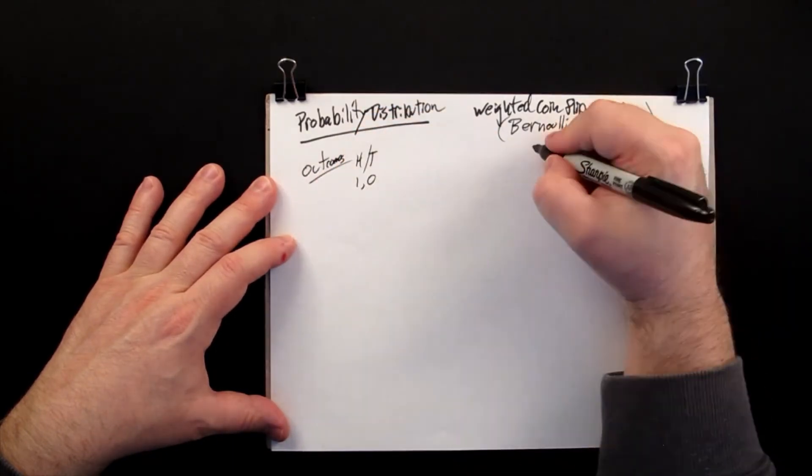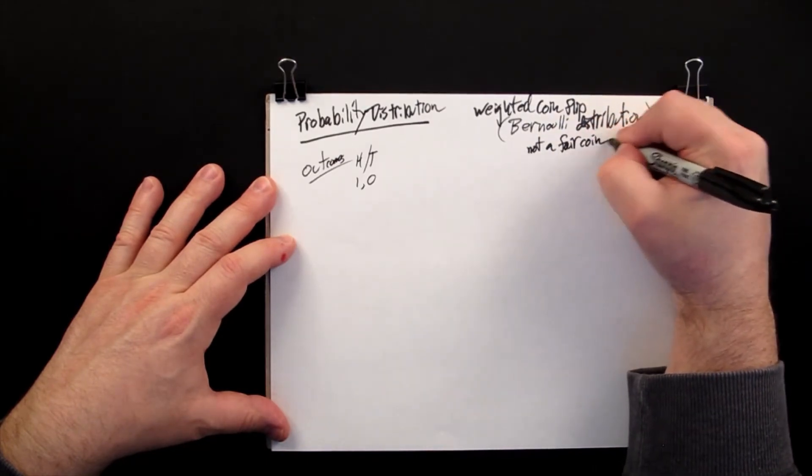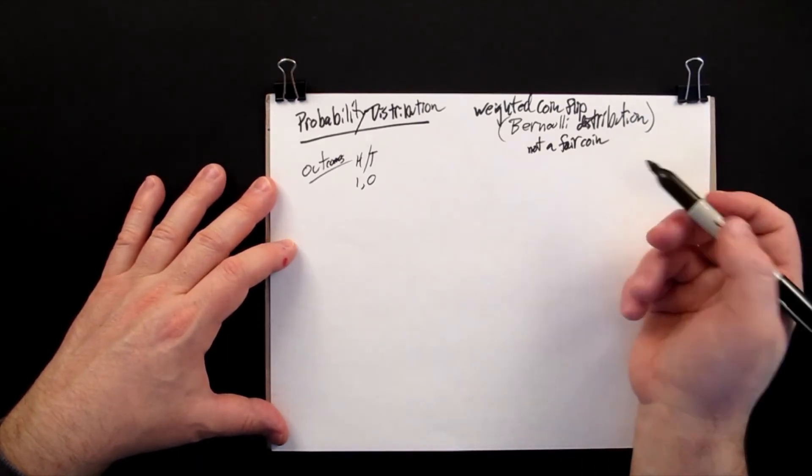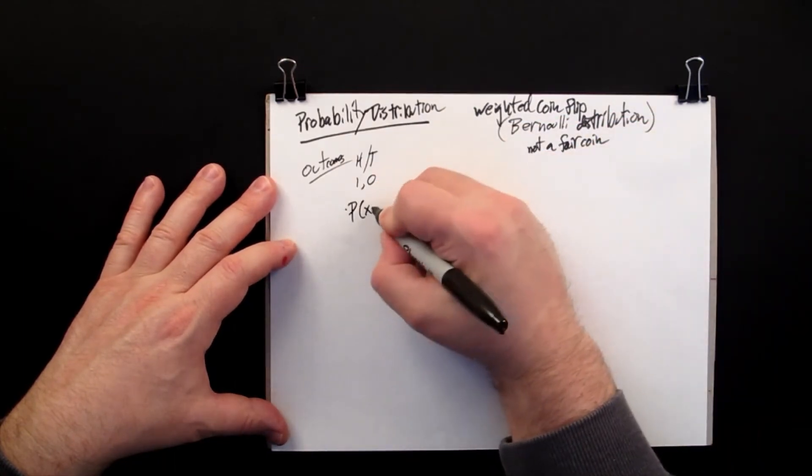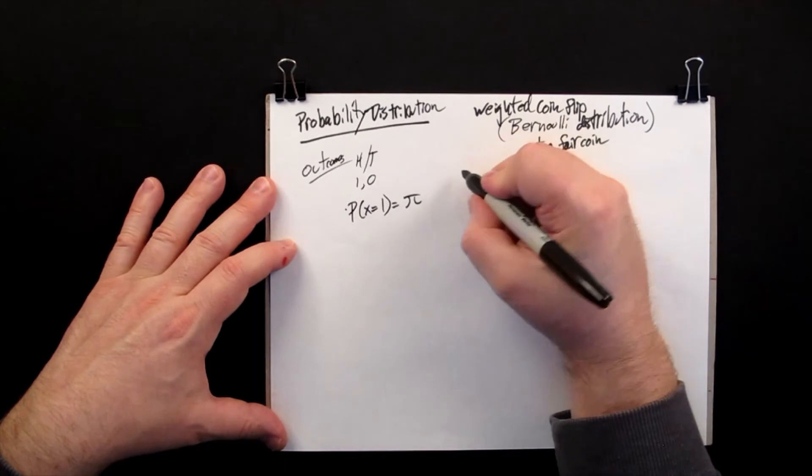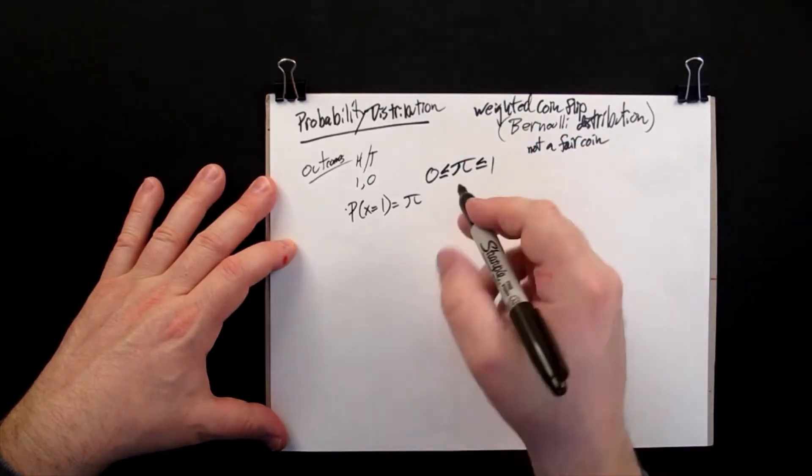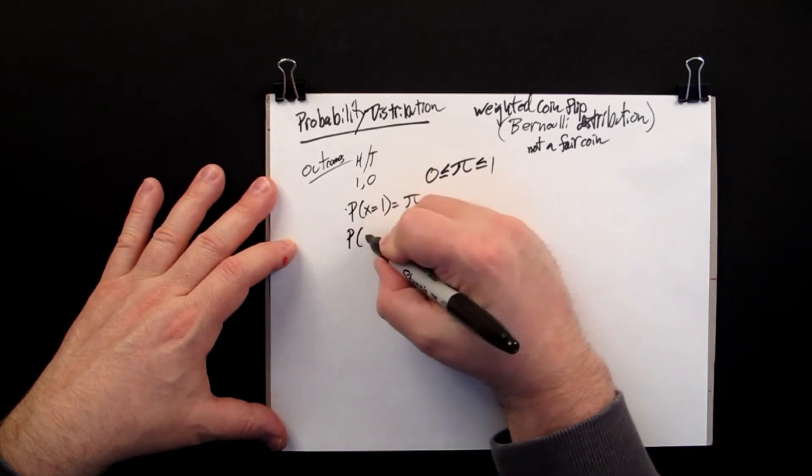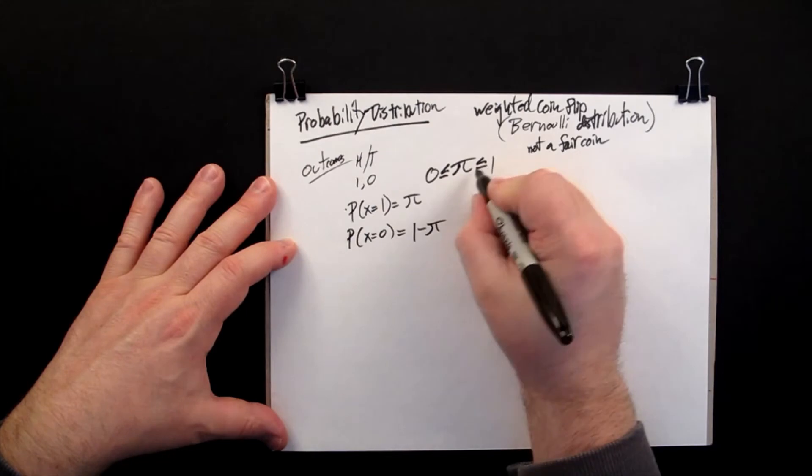But the critical difference here, this is not a fair coin. So you have to specify what the weighting is for a success or failure coming up. And so the chance of a success occurring is given by the parameter pi, pi being between 0 to 1, standing for the proportion of successes you have. And the chance of seeing a failure or no event happening is 1 minus this parameter.